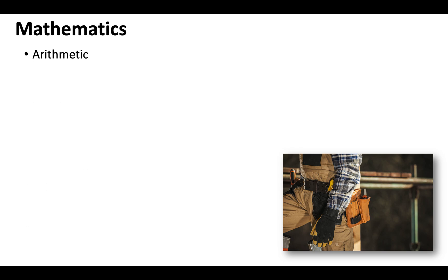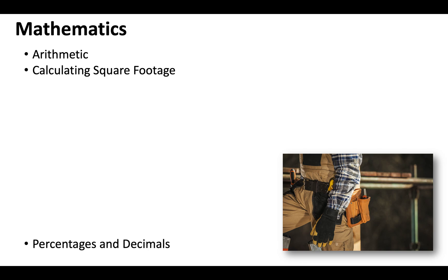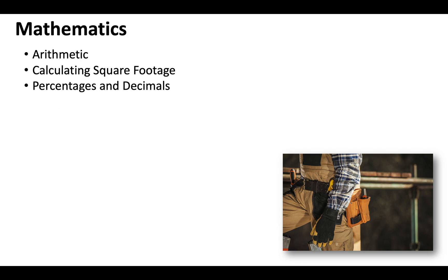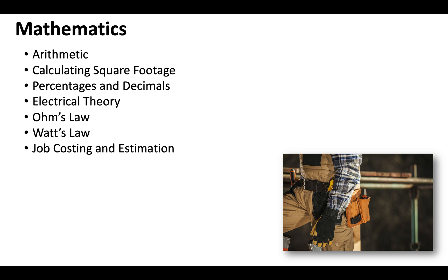The mathematics you want to be familiar with going into your sign contractor license exam include arithmetic — addition, subtraction, multiplication and division. You'll need to be able to calculate square footage, understand percentages and decimals, electrical theory, Ohm's law, Watt's law to a certain degree, and job costing and estimation, which will be a huge portion of the exam too.